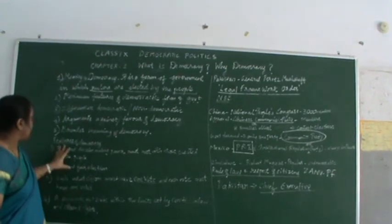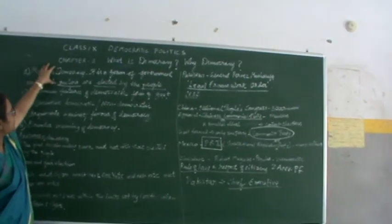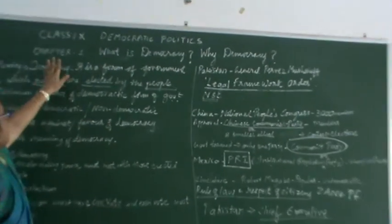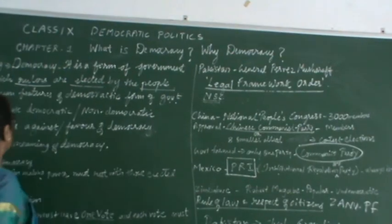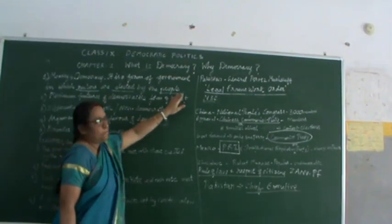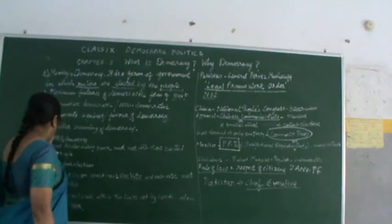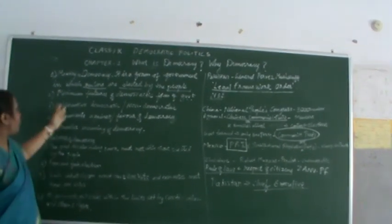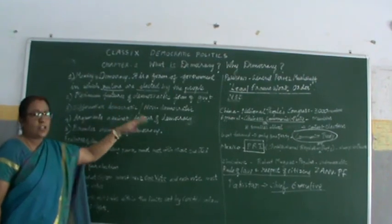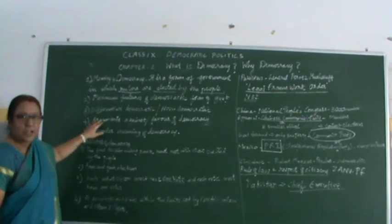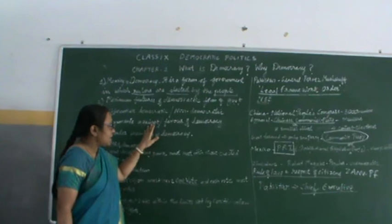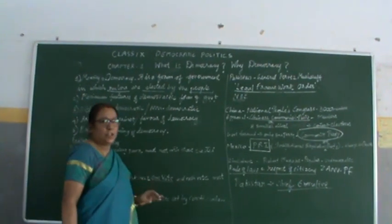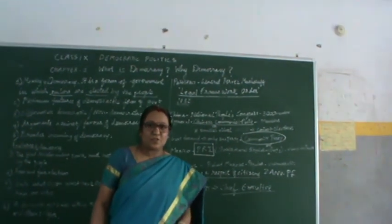Today's discussion was based on the simple definition of democracy: it is a form of government in which rulers are elected by the people. These are the features of democracy. In the next module, we will see how to differentiate democratic and non-democratic governments, what are the arguments against and in favour of democracy, and we will try to understand the broader meaning of democracy. Thank you, children.